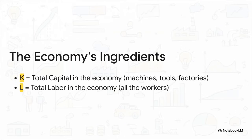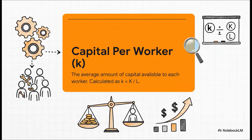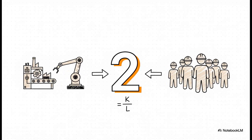At the highest level, you can think of an economy as having two basic ingredients. You've got capital, which we'll call Big K — that's all the physical stuff: the machines, the factories, the computers. And then you have labor, or Big L, which is all the people doing the work. But here's the twist, and this is absolutely crucial: the total amount of capital in a country isn't what's most important. What really drives everything is how much capital the average worker gets to use. We call this little k, or capital per worker. The math is super simple — just take all the capital, Big K, and divide it by all the workers, Big L. So if an economy has 200 machines and 100 workers, capital per worker, little k, is just 2. This little shift to thinking per worker unlocks the entire model.